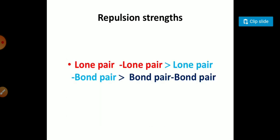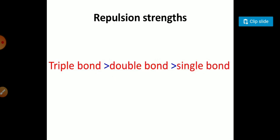The repulsion strength: lone pair-lone pair is maximum, then lone pair-bond pair, and the least repulsion strength is bond pair-bond pair. The repulsion strength of triple bond is maximum, then double bond, and the least repulsion strength is for single bond.